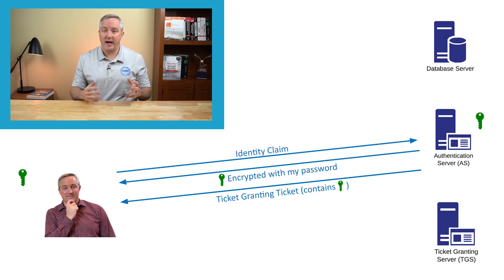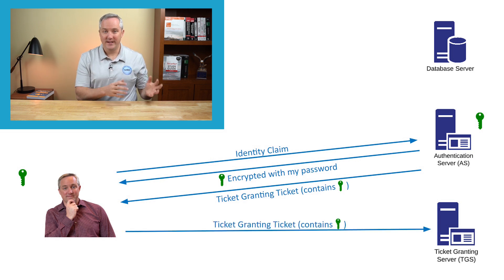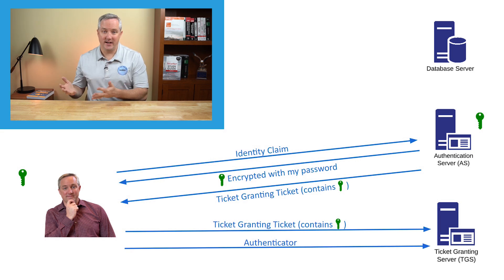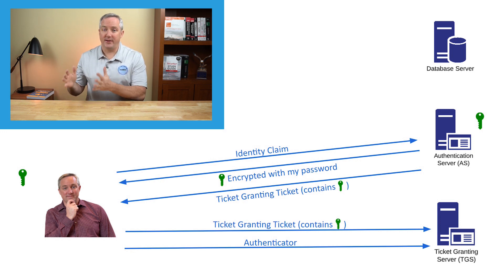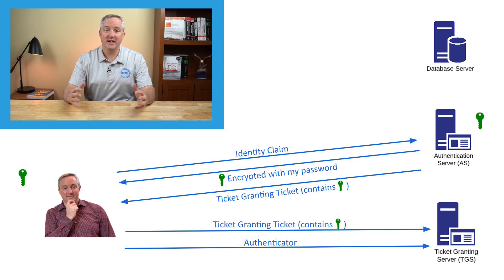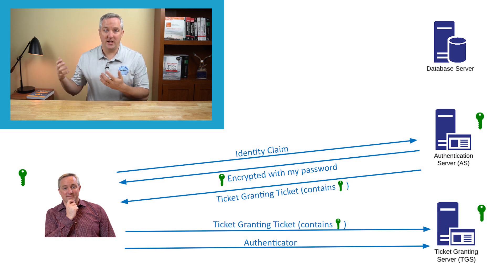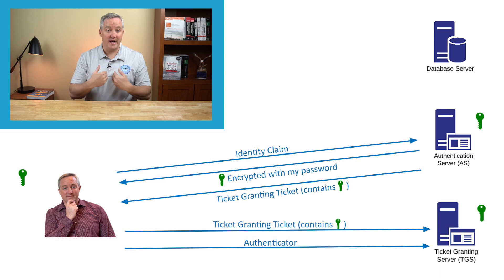I do this by sending the TGS two messages. The first message is my request — it says that I'd like to access that database, and it includes the Ticket Granting Ticket that I got from the authentication server. The second message is my authenticator. This includes my client ID and the current date and time, and I encrypt that message with the Client TGS Session Key that I obtained from the authentication server. When the TGS gets those messages, it first decrypts the Ticket Granting Ticket and obtains the Client TGS Session Key. Then it uses that key to decrypt the second message and make sure that I had access to the Client TGS Session Key myself. If that process works, the two Client IDs will match and the Ticket Granting Server knows that I am who I claim to be.